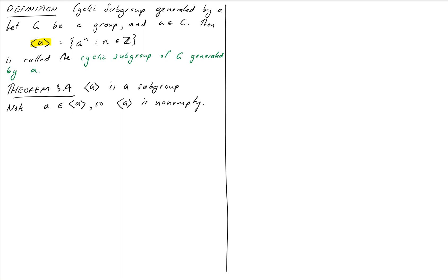Now we're going to use the one-step test which means we need to choose two arbitrary elements of our set and then show that one times the inverse of the other is a member of the set also. We will choose, let A to the M and A to the N be members of this set. We know that all elements of the set take that form so this is my two arbitrary choices of elements of our set.